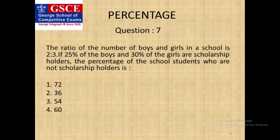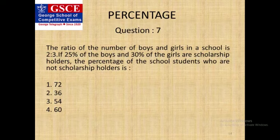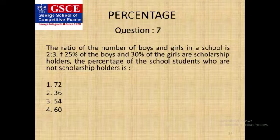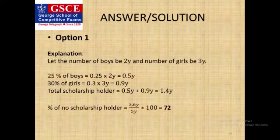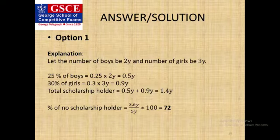It's question 7: The ratio of the number of boys and girls in a school is 2 is to 3. If 25 percent of the boys and 30 percent of the girls are scholarship holders, the percentage of school students who are not scholarship holders is? Reminding you, calculation in 100 is always easy in percentage. So let's say the total number of boys will be 200 and that of the girls will be 300.